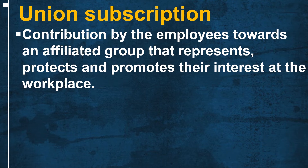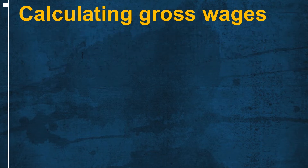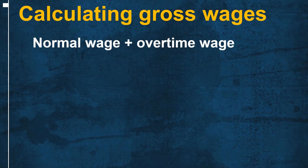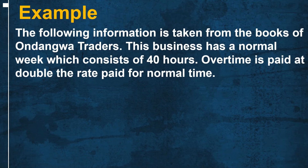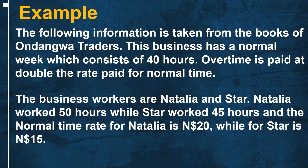Let us look at the formula to calculate gross wage, which is normal wage plus overtime wage. The following information is taken from the books of Kondangwa Traders. This business has a normal week of 40 hours, and overtime is paid at double the normal time rate. The workers are Natalia and Star. Natalia worked 50 hours, while Star worked 45 hours. The normal time rate for Natalia is N$20, while for Star it is N$15.